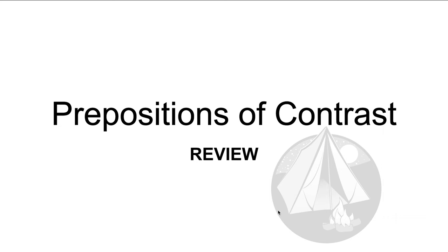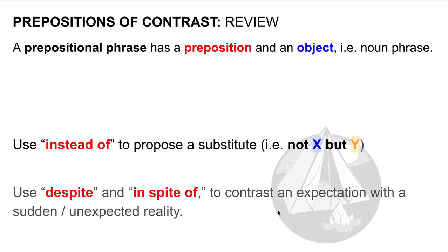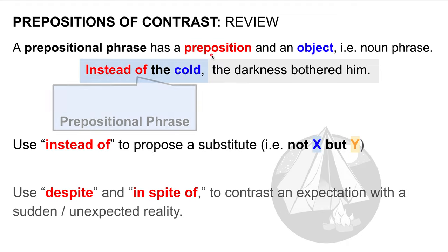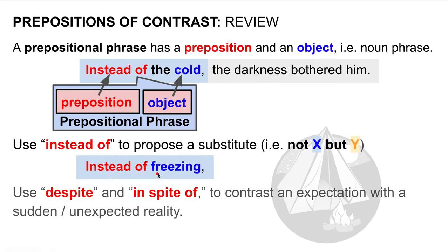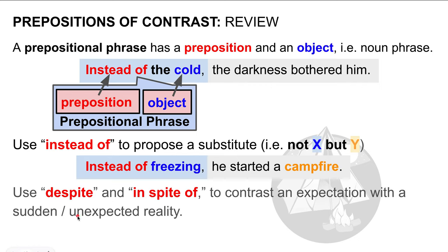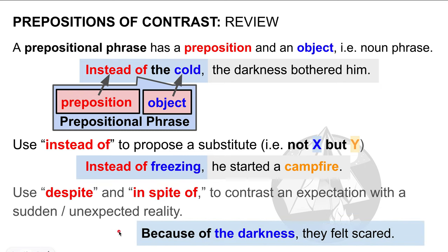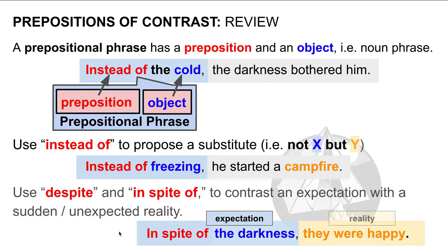Let's do a quick review of prepositions of contrast. A prepositional phrase has a preposition — instead of is our preposition — and it has an object, the cold. That makes a prepositional phrase. Use instead of to propose a substitute — not X but Y. For example, instead of freezing, he started a fire: not X, not freezing, but Y, started a campfire. Use despite and in spite of to contrast an expectation with a sudden or unexpected reality. Because of the darkness, they felt scared — that's the expectation. The reality: in spite of the darkness, they were happy.